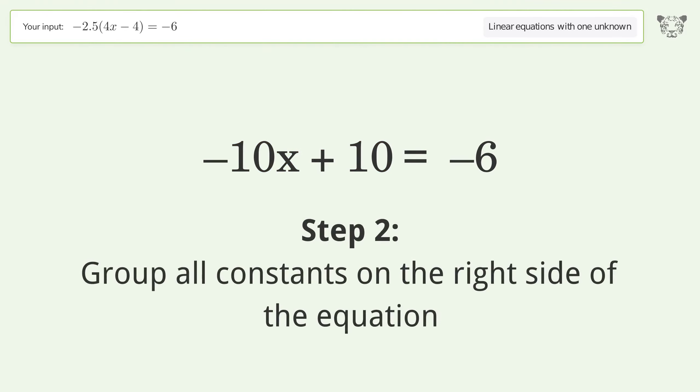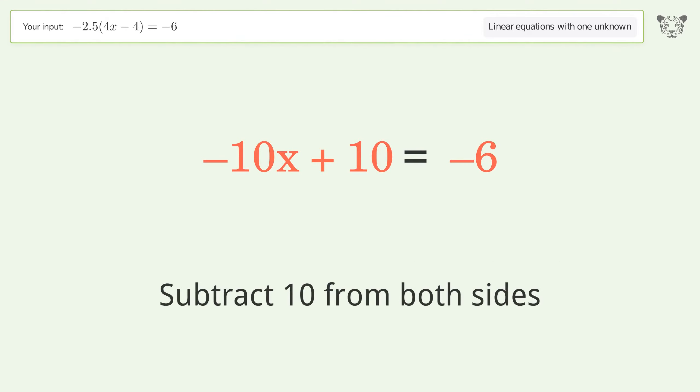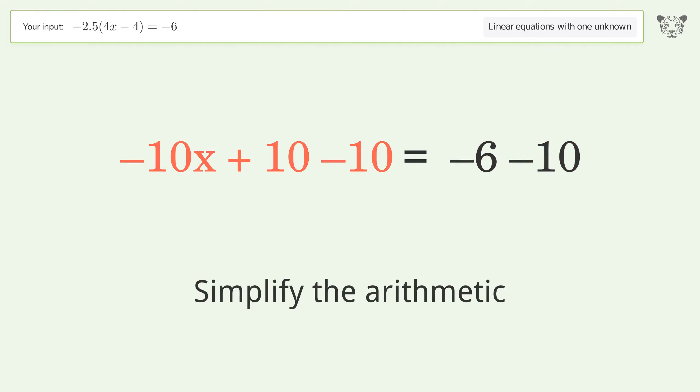Group all constants on the right side of the equation. Subtract 10 from both sides. Simplify the arithmetic.